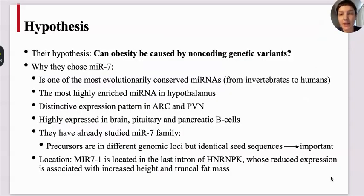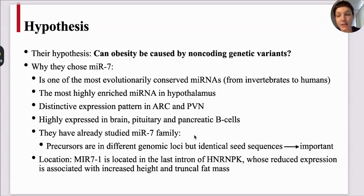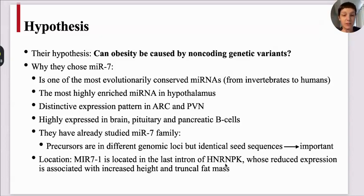Their hypothesis is: can obesity be caused by non-coding genetic variants? For that they study microRNA-7. First, because it's one of the most evolutionarily conserved microRNAs in either invertebrates or humans. Second, it is the most highly enriched microRNA in the hypothalamus, with a distinctive expression pattern in the arcuate and paraventricular nucleus. Third, it is highly expressed in brain, pituitary, and pancreatic beta cells. And fourth, they have already studied this microRNA family. Precursors of this microRNA-7 family are encoded in different genomic loci but have identical seed sequences, which indicates it's an important microRNA. Also, its location close to ribonucleoprotein K — when that expression is reduced — is linked to an increase of truncal fat mass.